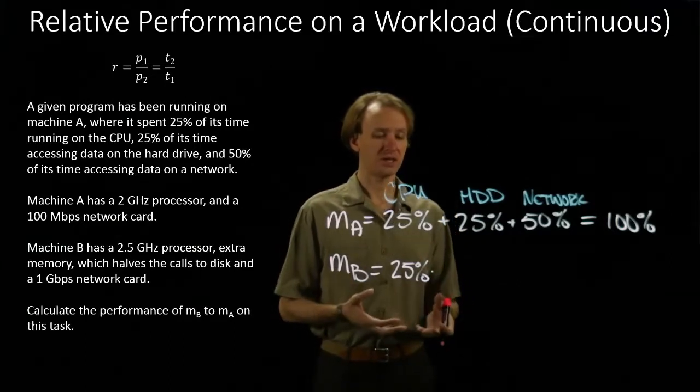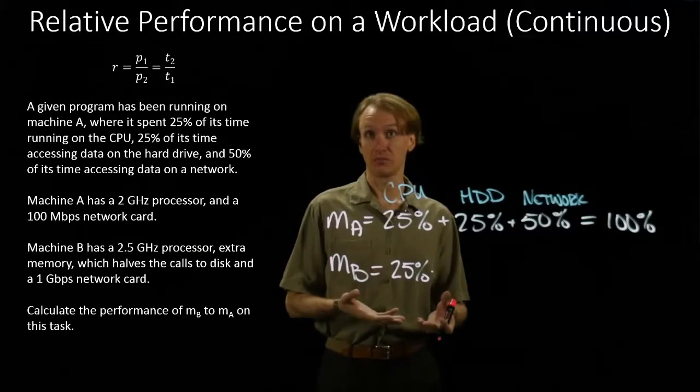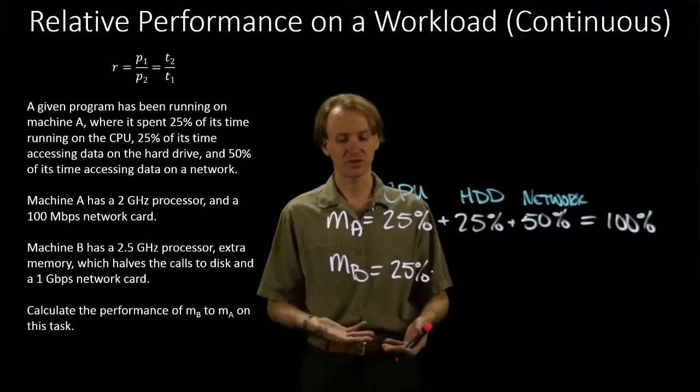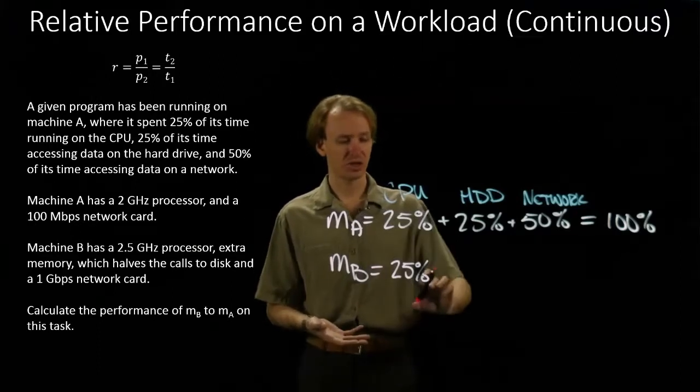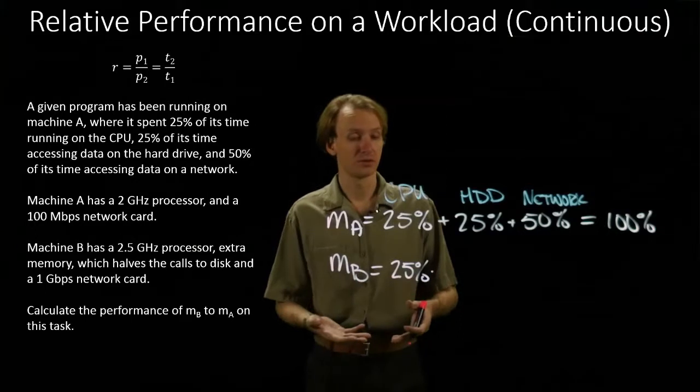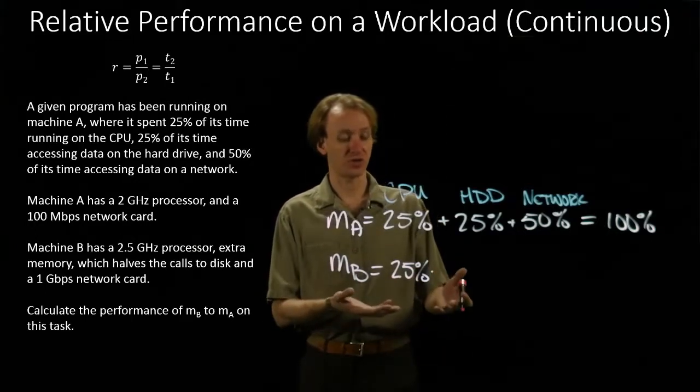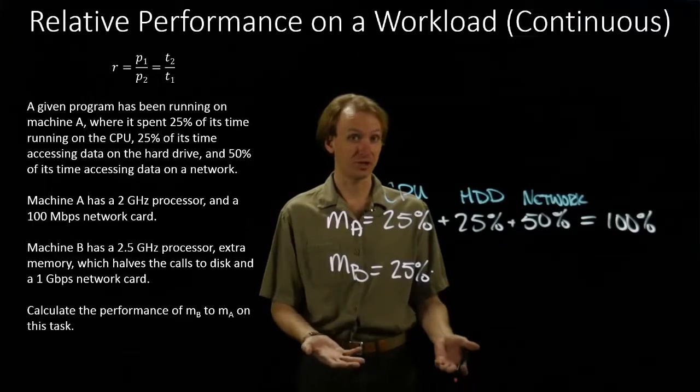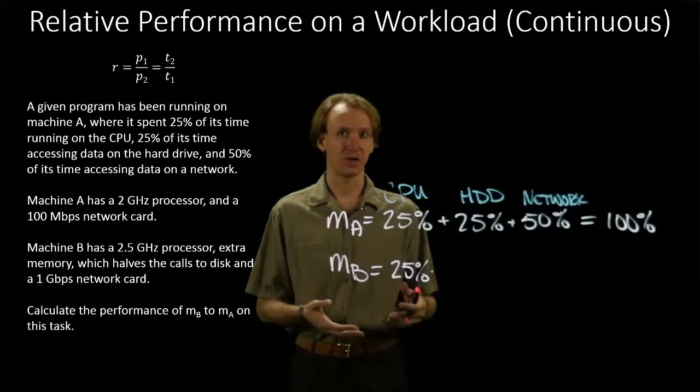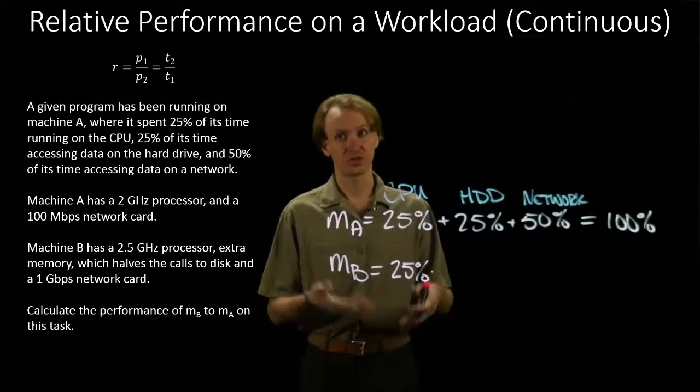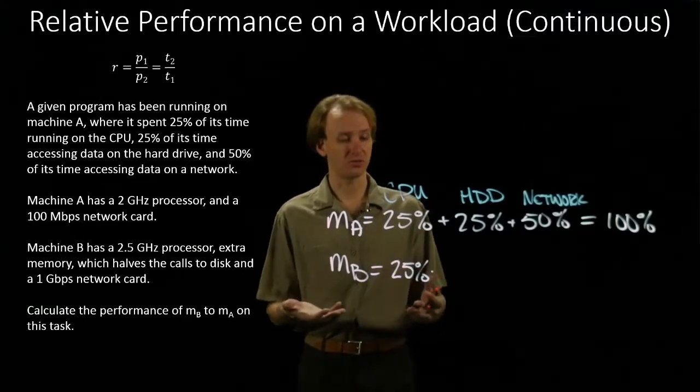And I'm going to want to represent that as another performance ratio. In this case, I expect that this will run faster on machine B, so I should have a performance ratio that's less than 1. If my performance ratio is greater than 1, then the CPU instructions would end up taking longer on machine B. But I know that machine B has a 2.5 GHz processor, which is faster than machine A's 2 GHz processor.